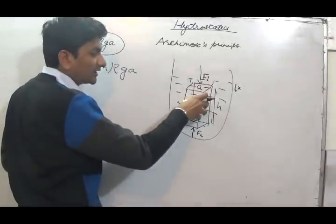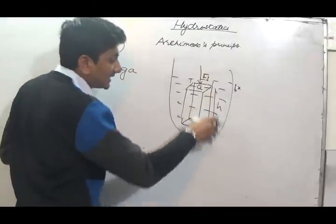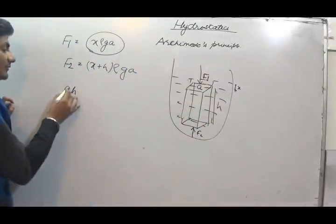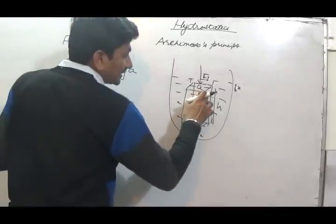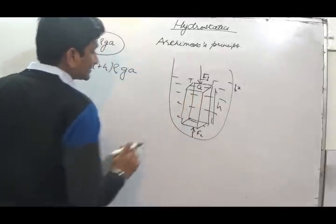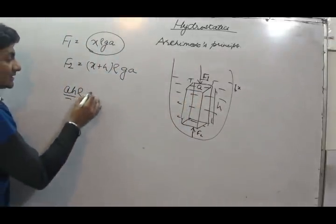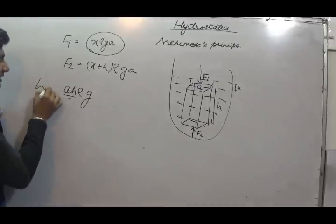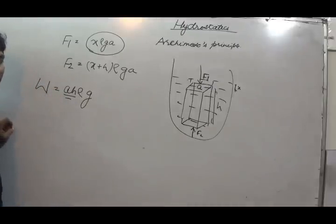This body — if it was not there and there had been water instead — that water volume would have been A into H, with density rho. G is the acceleration due to gravity. Then this quantity A into H rho G is the weight of water displaced by this body.